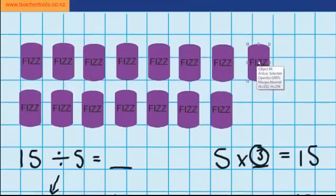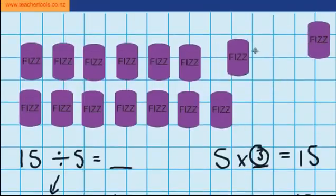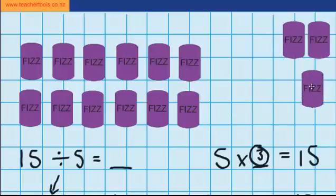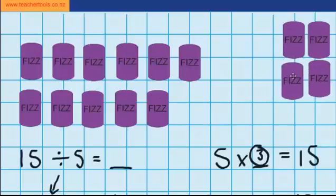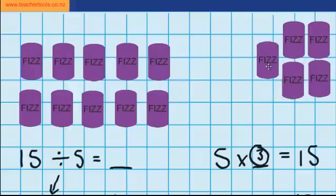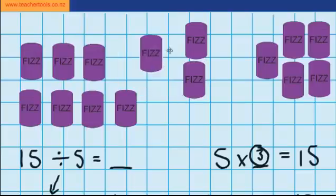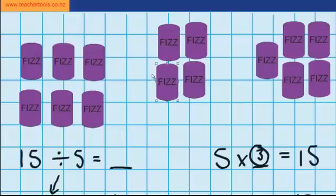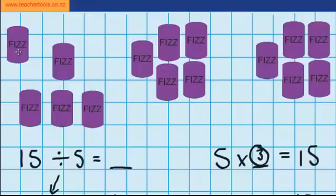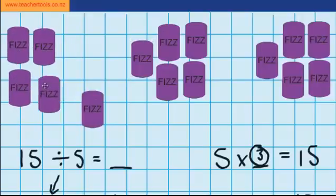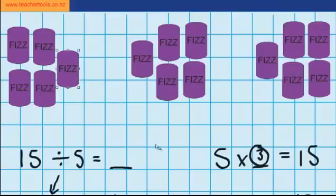I'm going to make a group of 5 cans over here. So that's one lot ready for packing. I'm going to make another group here — so that's a second group ready for packing. And I'm going to make one group over here. You can see we've got 3 groups, and in each of those groups there's 5 cans.